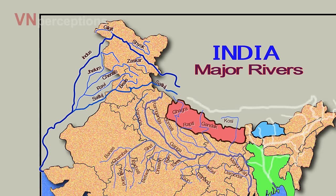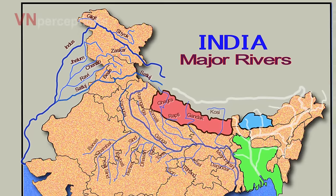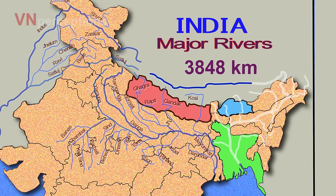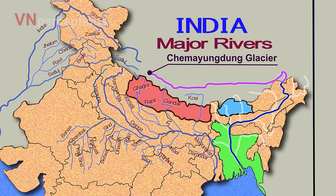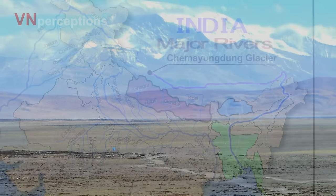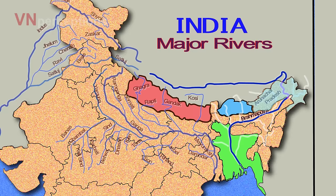The next important Himalayan river is the River Brahmaputra. River Brahmaputra is one of the major rivers of Asia which flows through China, India and Bangladesh. This river is 3848 km long. River Brahmaputra is also called Tsangpo in Tibet. It originates on the Chemayungdung glacier located on the northern side of the Himalayas in Purang county of Tibet. The Brahmaputra enters India in the state of Arunachal Pradesh where it is called Siang. In Assam, the river is called Brahmaputra.